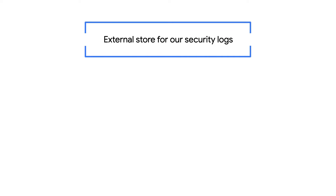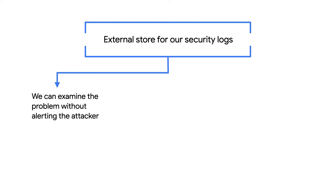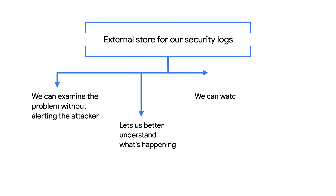Luckily, we've set up an external store for our security logs so that we can still check out what happened. By putting our forensic artifacts in a separate place — in this case, a Google Cloud project — we can examine the problem without alerting the attacker. This lets us better understand what's happening, and we can watch and record their actions to tip off local authorities if needed.